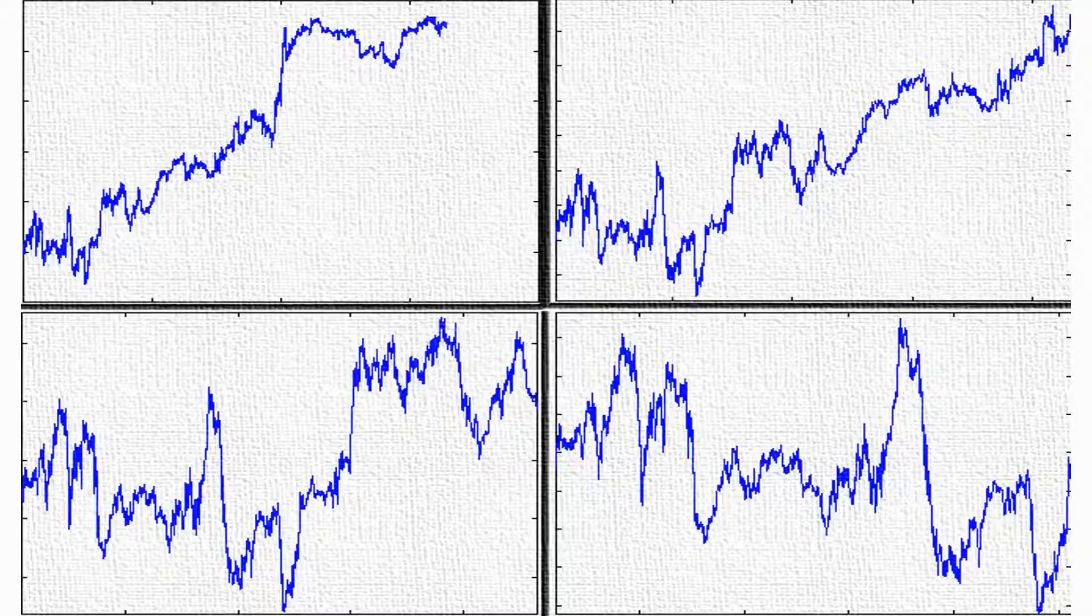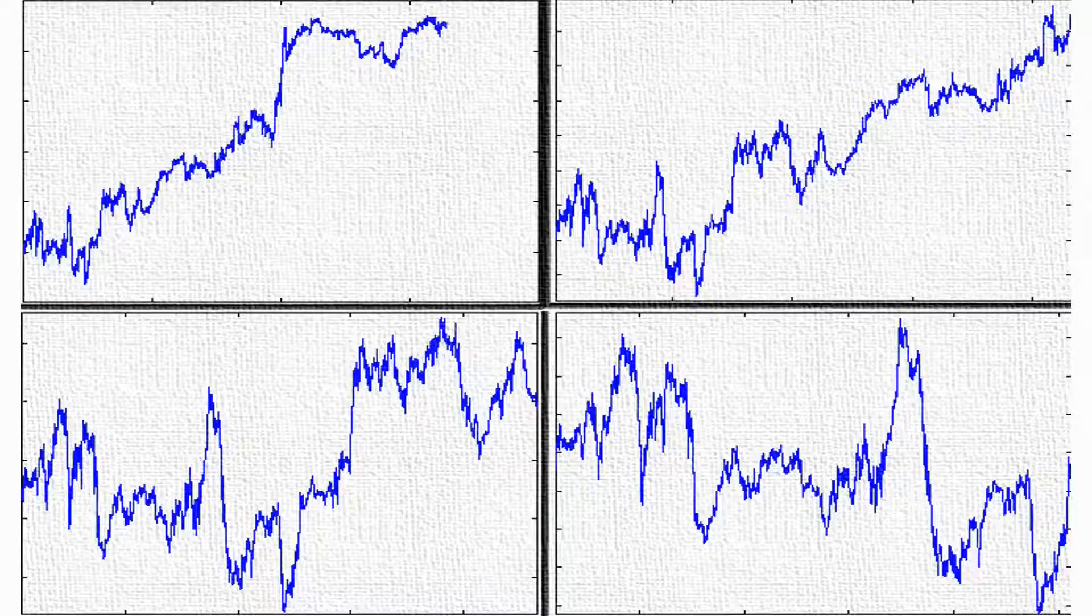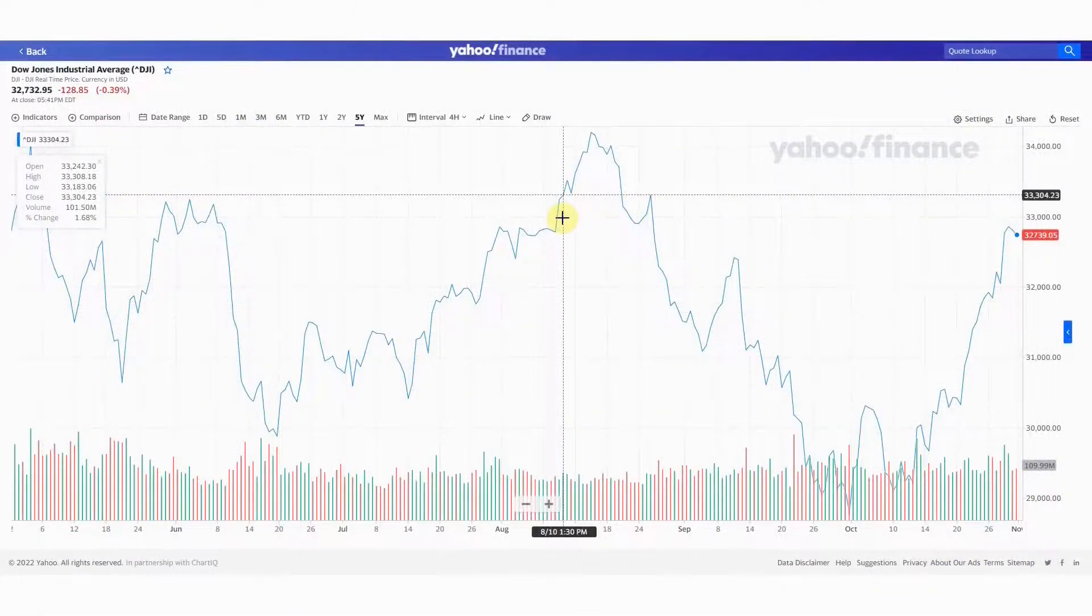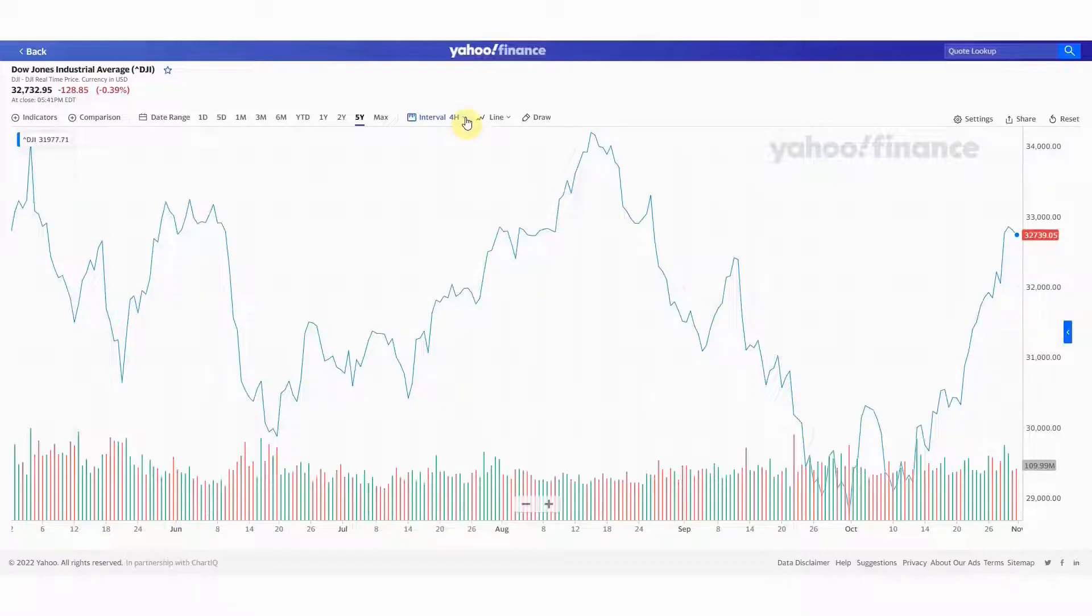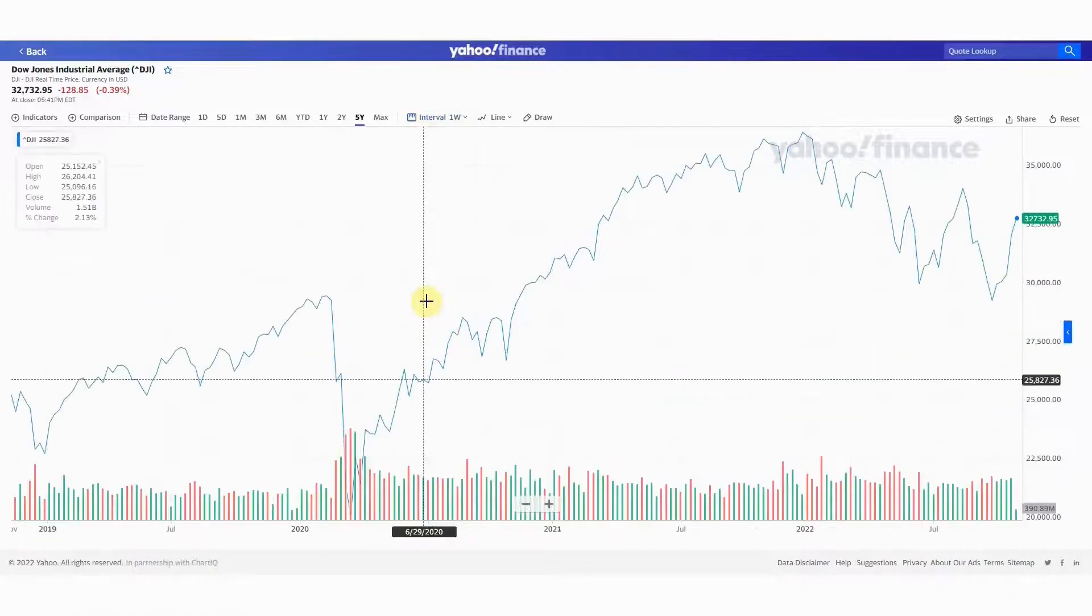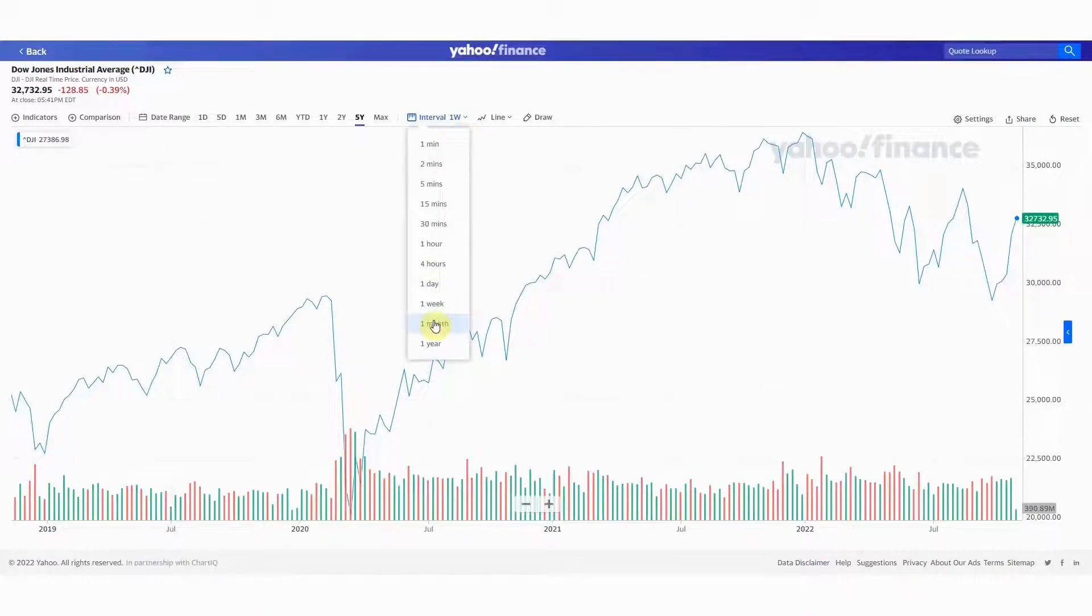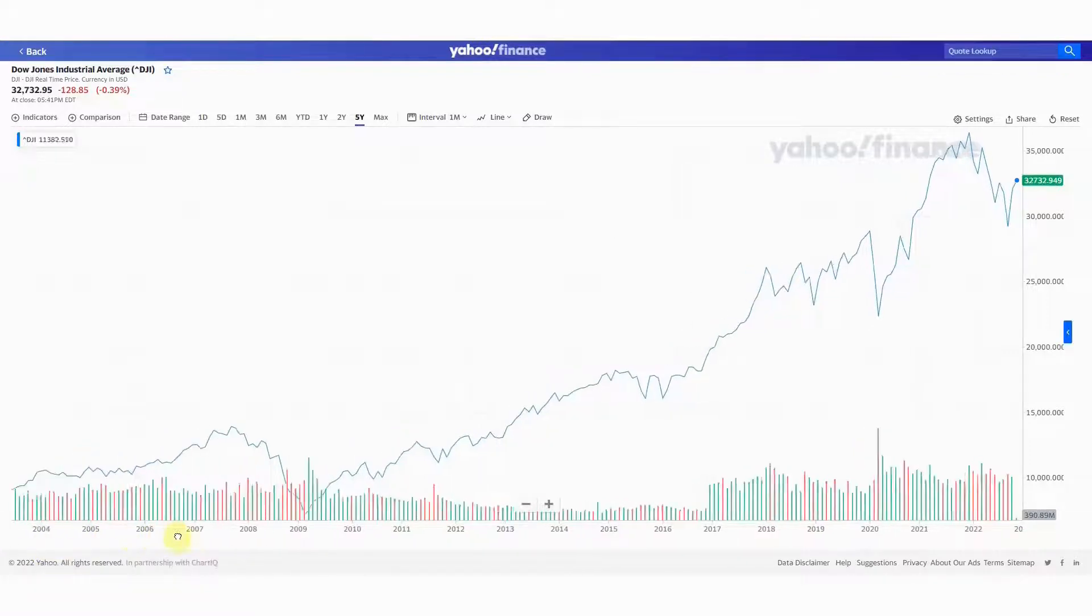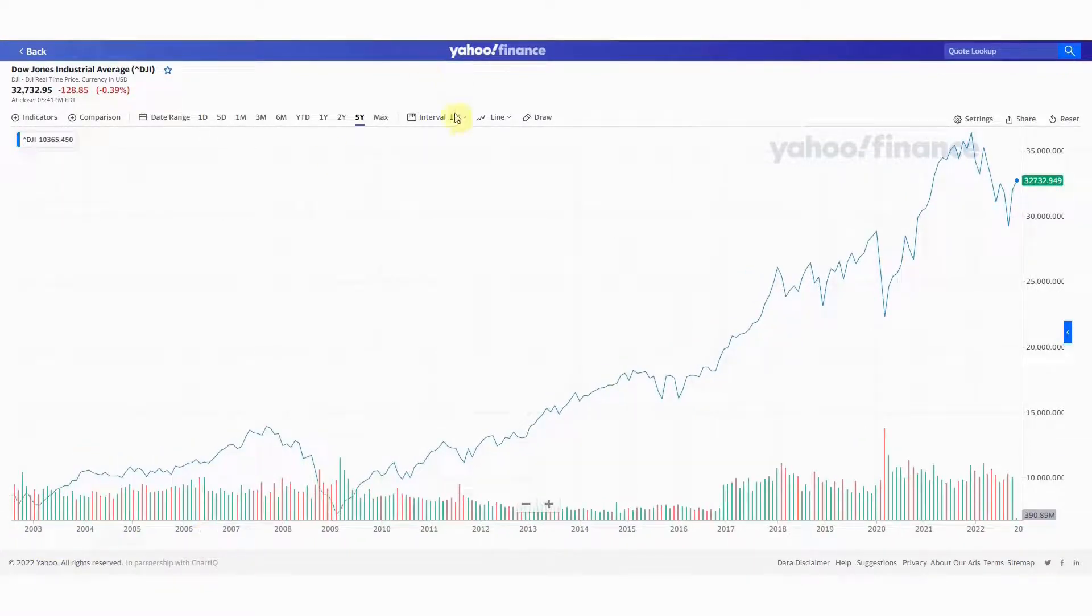But we can demonstrate this as well by using Yahoo Finance's plotting capabilities. So if I look at this chart of the Dow, and I go here and I click on different time periods for this, and then I go and rescale this chart, you can see that for the timescales I'm looking at here, there is a great deal of similarity in how the charts look regardless of the timescale I'm choosing. So that's the essence of a fractal. It looks the same regardless of the timescale.